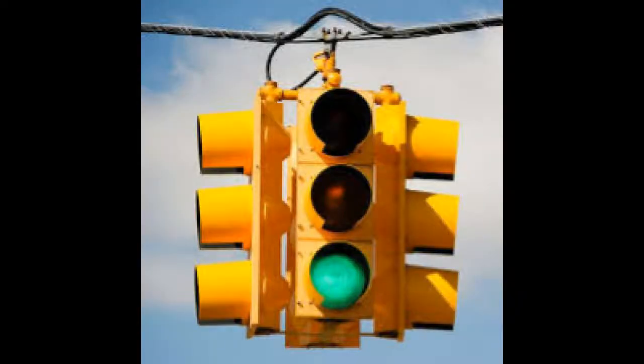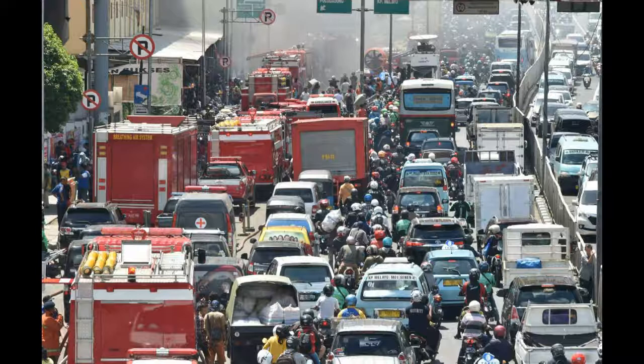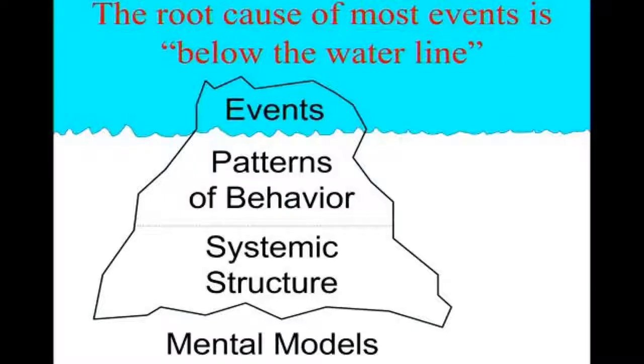So a traffic light down on Route 9. A traffic light there is a structure. It creates a pattern of behavior of people stopping. And the mental model is we should stop at traffic lights. If you travel in Asia, that's not a mental model that often exists. The model in Indonesia, where I've driven, is every person for themselves. It's just a free-for-all. It's a mental model.